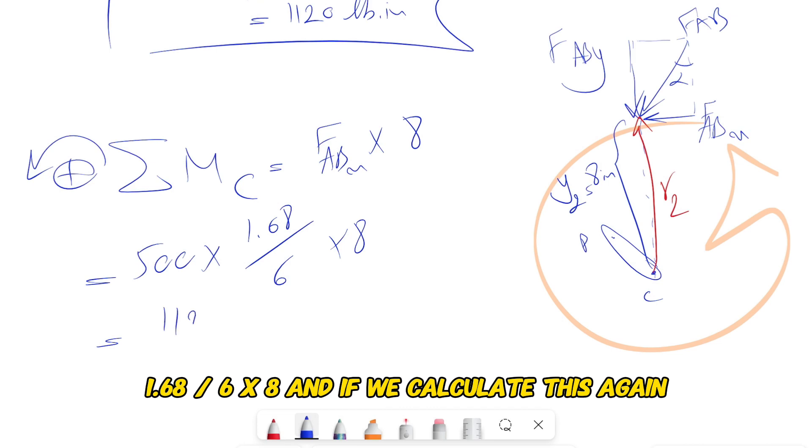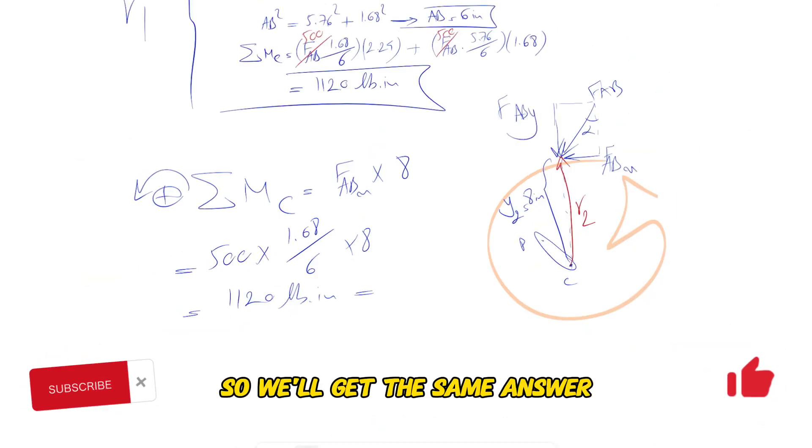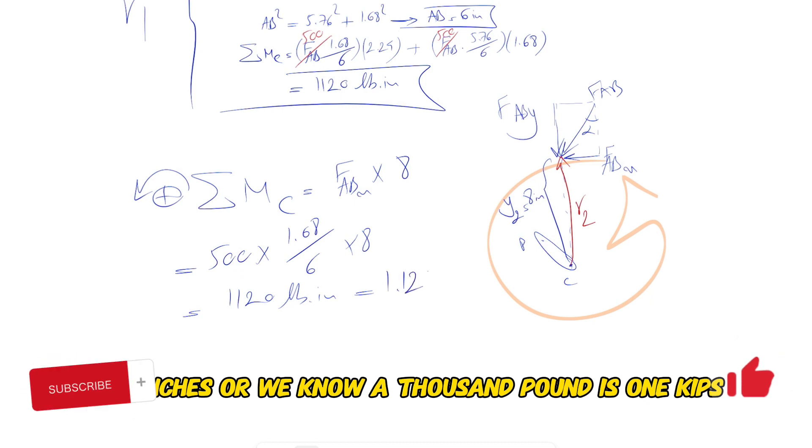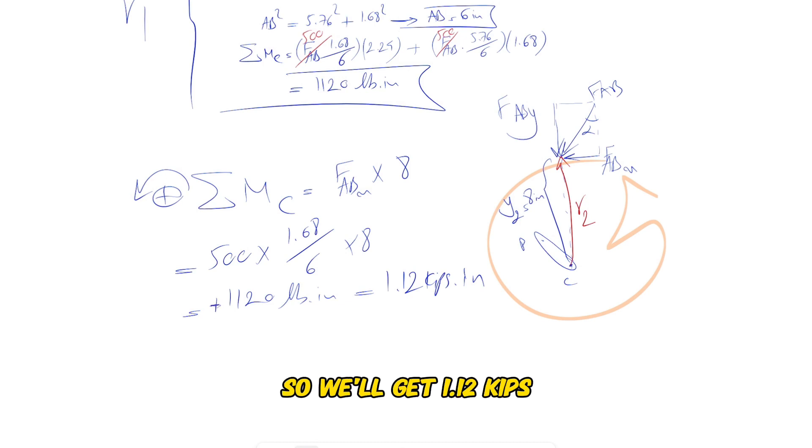Times 8. And if we calculate this, we'll get the same answer: 1,120 pound-inches. Or we know a thousand pounds is kips, so we'll get 1.12 kips.